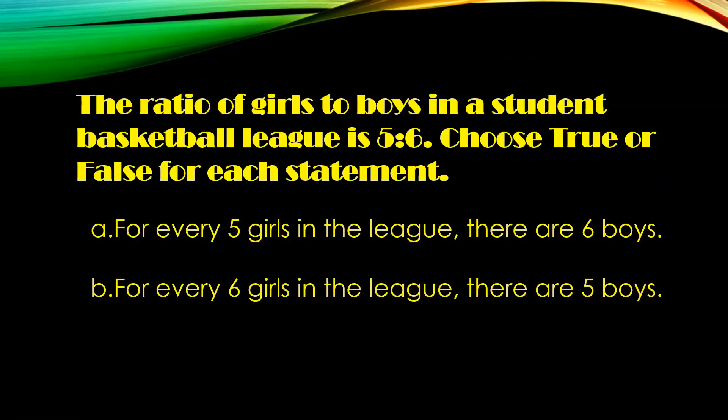The ratio of girls to boys in the student basketball league is 5 to 6. Choose true or false for each statement. Statement A: for every 5 girls in the league, there are 6 boys. Going back to the question, I'm comparing girls to boys and the ratio is 5 to 6, so girls goes with 5 and boys goes with 6. This is very true.